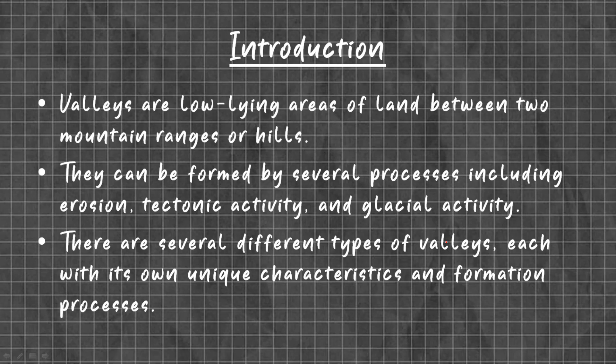So what are valleys? Valleys are low-lying areas of land between two mountain ranges or hills. They can be formed by several processes including erosion, tectonic activity, and glacial activity. There are several different types of valleys, each with its own unique characteristics and formation process. The area between two mountains is called a valley.